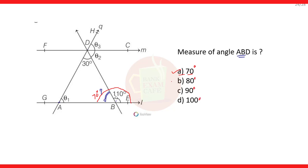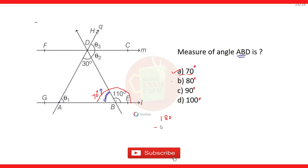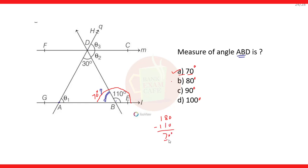If you want to write it out: angle DBE plus angle DBA equals 180 degrees. This angle is 110 degrees, so therefore shifting 110 to the other side, it will be 180 minus 110, which equals 70 degrees. So option A is the correct option.